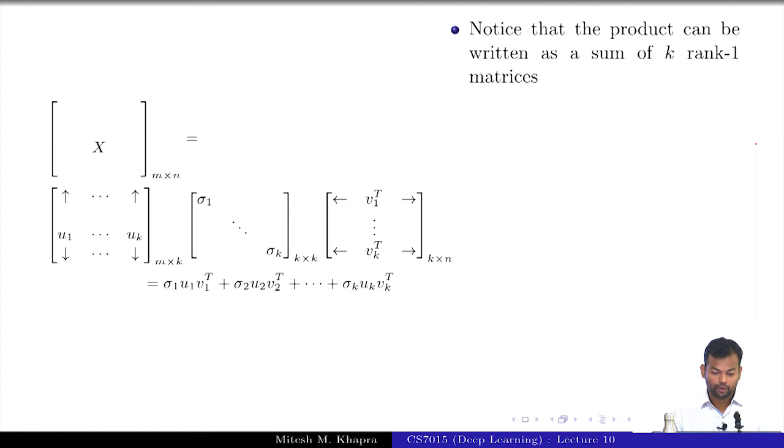Notice that this product, and I think you have done this in one of the assignments or something, can be written as a sum of the following products. So I can write it as sigma_1 U_1 V_1 transpose, sigma_2 U_2 V_2 transpose and so on. Can you tell me what this sum is? This is a rank 2 approximation of the original matrix and I keep taking more terms I get more and more rank approximations of the original matrix.